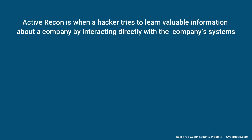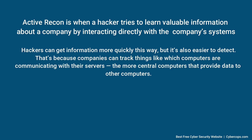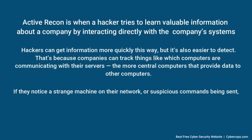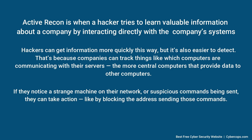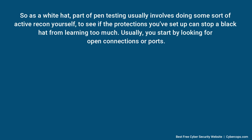Active recon, on the other hand, is when a hacker tries to learn valuable information about a company by interacting directly with the company's systems. Hackers can get information more quickly this way, but it's also easier to detect. Companies can track things like which computers are communicating with their servers. If they notice a strange machine on their network or suspicious commands being sent, they can take action like blocking the address sending those commands. As a white hat, part of pen testing usually involves doing some sort of active recon yourself to see if the protections you've set up can stop a black hat from learning too much.